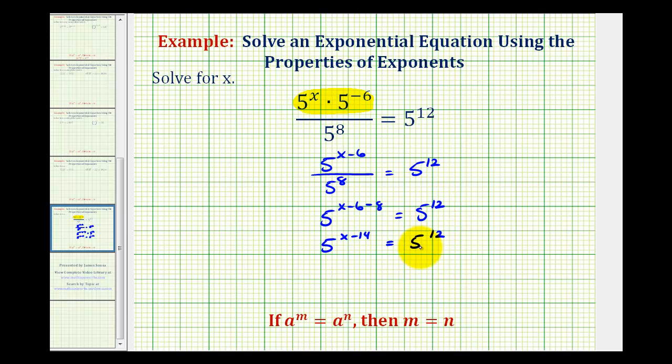And now if the left side is equal to the right side and we have a common base of five, the exponents must be equal to each other, meaning x minus 14 must equal 12.